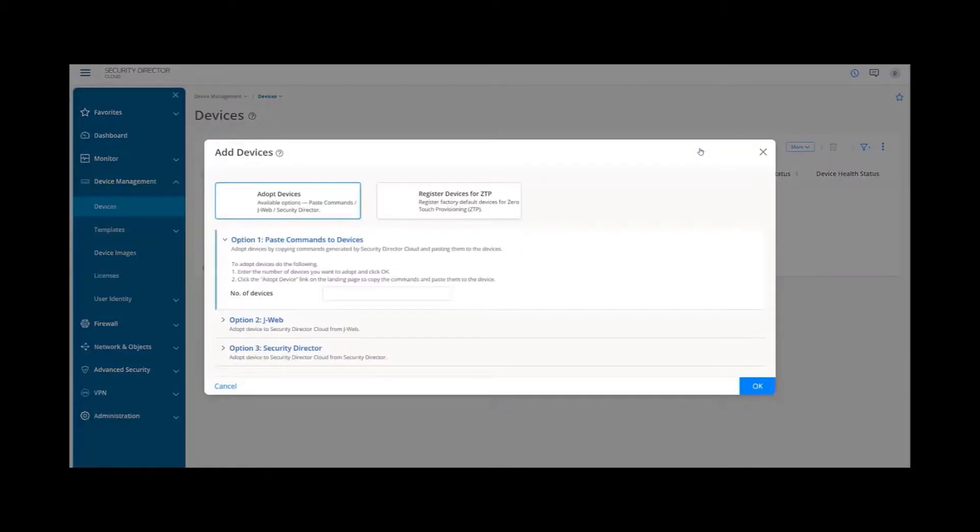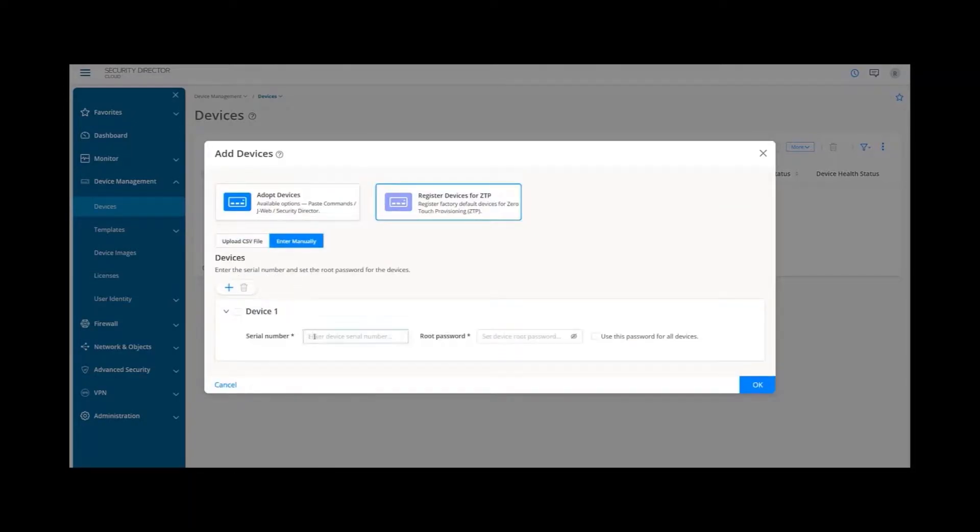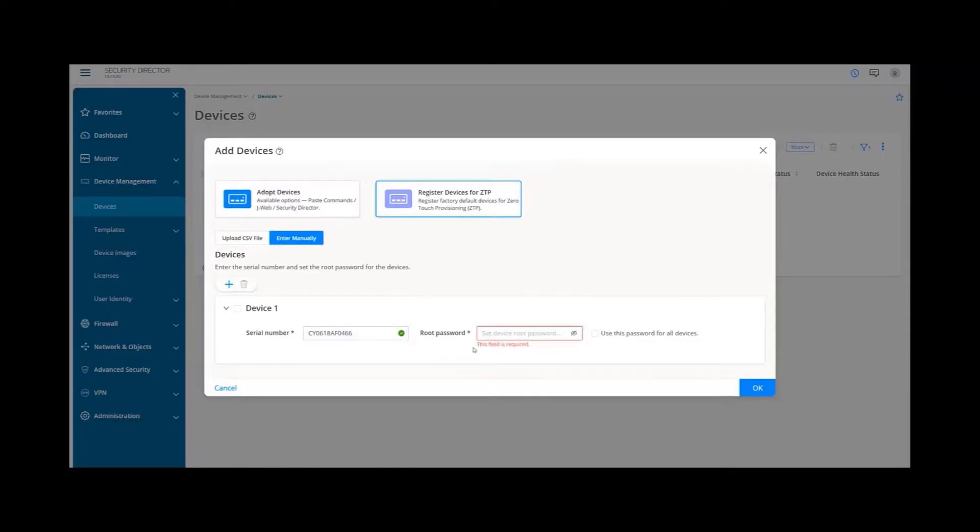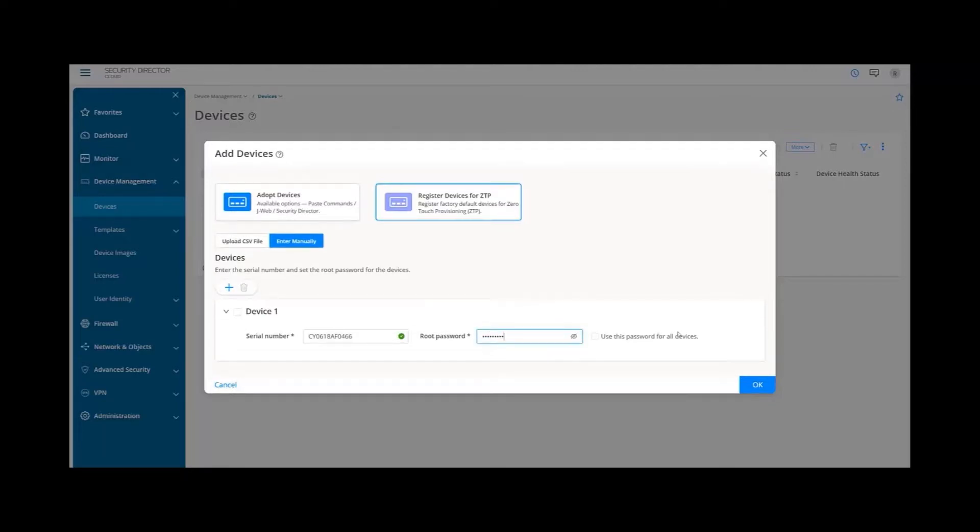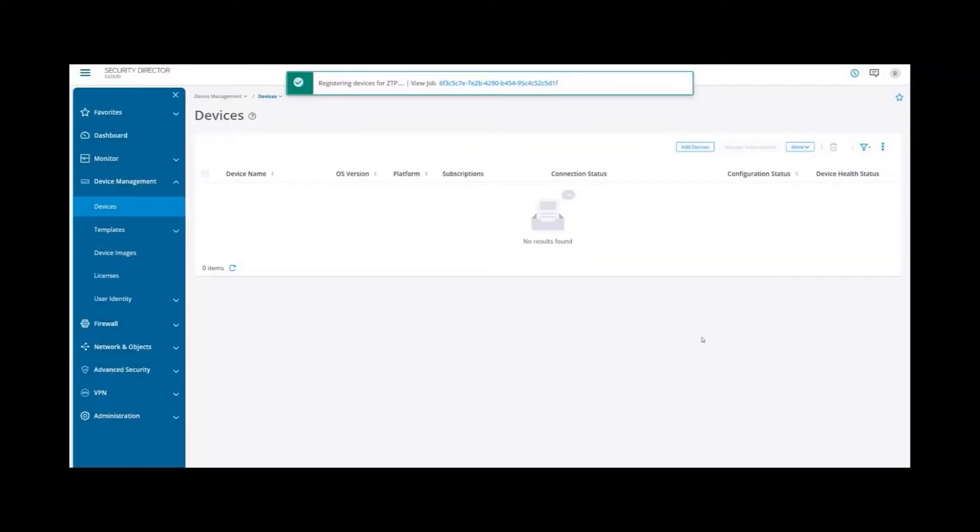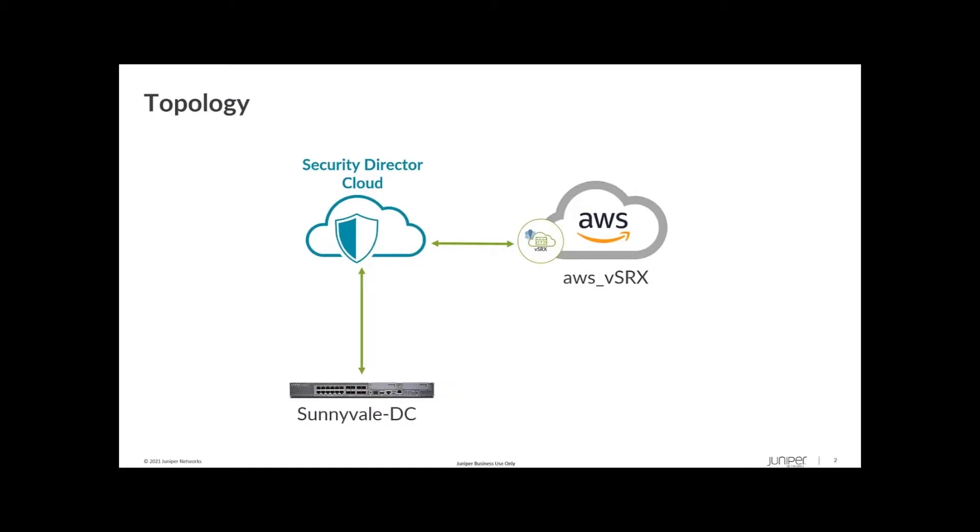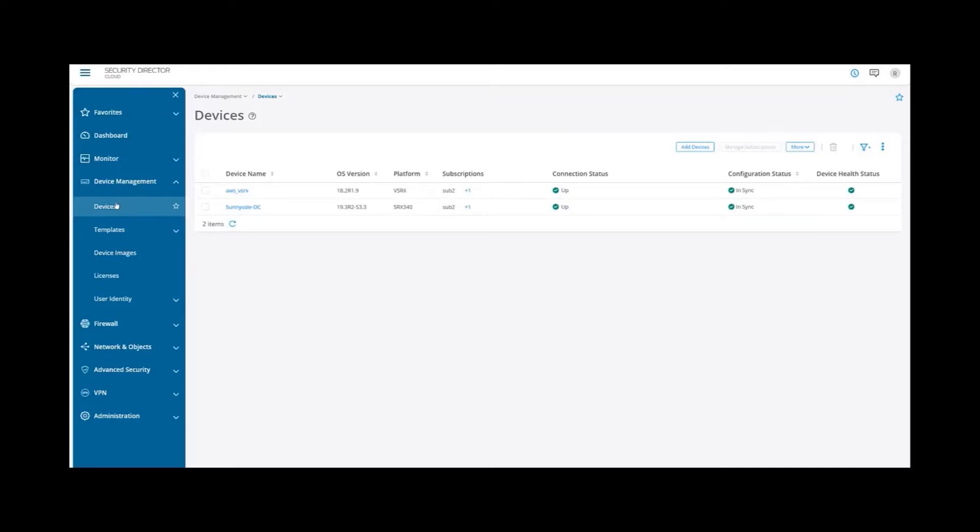Zero-touch provisioning is increasingly important for distributed deployments and Security Director Cloud accommodates for that use case. So I've clicked on Devices and I'm going to add a security device to Security Director Cloud from this UI. I can do this for a single site or for multiple at the same time. I've added the serial number and the root password, and just like that, the device is 100% managed by Security Director Cloud. And one of the benefits of Security Director Cloud is that you can create a policy once and apply it anywhere. So I'm going to show you an existing policy that's been applied to the device that we just added through ZTP.